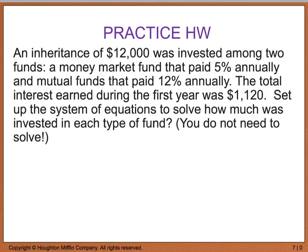For practice homework, there is a similar investment problem: an inheritance of $12,000 was invested among two funds — a money market fund that paid 5% annually and a mutual fund that paid 12% annually — and the total interest earned during the first year was $1,120. I want you to just set up the system of equations that would tell us how to solve for the amount invested in each fund. You do not have to solve it. I hope you have a good night and I will see you in class tomorrow.